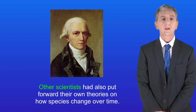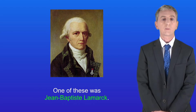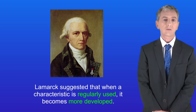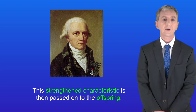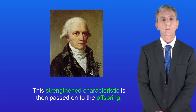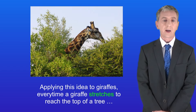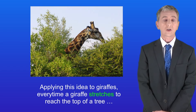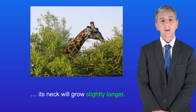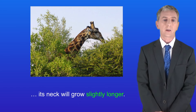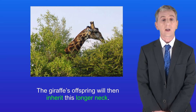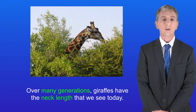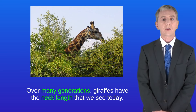Other scientists had also put forward their own theories on how species change over time, and one of these was Jean-Baptiste Lamarck. Lamarck suggested that when a characteristic is regularly used it becomes more developed, and this strengthened characteristic is then passed on to the offspring. Applying this idea to giraffes: every time a giraffe stretches to reach the top of a tree its neck will grow slightly longer, and the giraffe's offspring will then inherit this longer neck. Over many generations, giraffes develop the neck length that we see today.